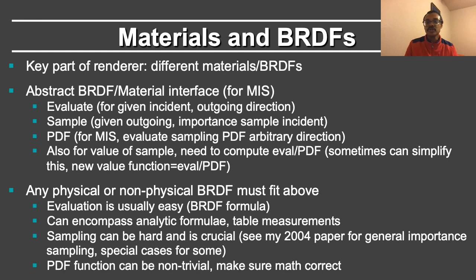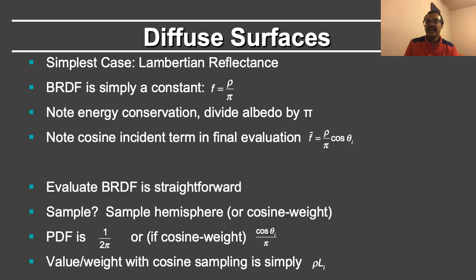The probability distribution function can also be non-trivial and you often need to spend some amount of effort to make sure the math is actually correct. Let's consider the simplest case of a diffuse Lambertian surface. The BRDF is simply a constant: rho is the diffuse albedo in the range of 0 to 1, divided by pi. Notice that for energy conservation, you need to have this division by pi. The transport function will involve a cosine term in the final evaluation, and that is why the BRDF involves multiplying by this cosine term as well.